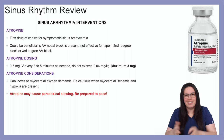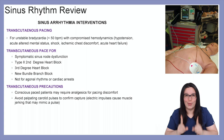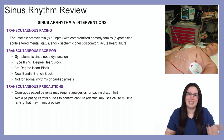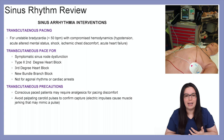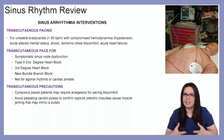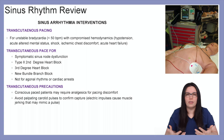Transcutaneous pacing is not fun for our patients, especially our conscious patients. It's used for unstable bradycardias less than 50 beats per minute with compromised hemodynamics — hypotension, acute altered mental status changes, shock, ischemic chest discomfort, and acute heart failure. We use transcutaneous pacing for symptomatic sinus node dysfunction rhythms, type II second degree heart blocks, third degree and complete heart blocks, and new bundle branch patients showing slowing. We do not use this for agonal rhythms or cardiac arrest — it shows no benefit. For CPR, if it's shockable, we shock; if not, we give medications and provide CPR.